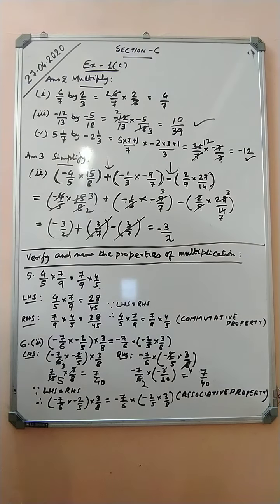Question number five: verify and name the property. The question is: four by five into seven by nine equals seven by nine into four by five. LHS: four by five into seven by nine gives twenty-eight by forty-five. RHS: seven by nine into four by five also gives twenty-eight by forty-five. Since LHS equals RHS, this is verified by the commutative property.